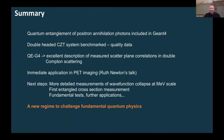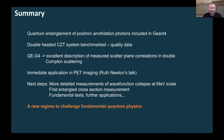To summarize: we've included quantum entanglement in Geant4, benchmarked to the CZT system, and clearly shown this is necessary to accurately simulate the scatter plane correlations in Compton scattering. Ruth will talk about the first application of this in PET imaging. Our next steps are to get more detailed measurements of wave function collapse at the MeV scale — totally new ground — measure the cross section, and then move on to fundamental tests and further applications. Thank you very much.